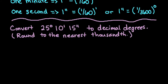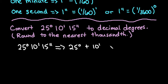So what we're going to do is we're going to start with the 25 degrees, 10 minutes, 15 seconds, and we're going to rewrite this as an addition statement. So we really have 25 degrees plus 10 minutes plus 15 seconds.